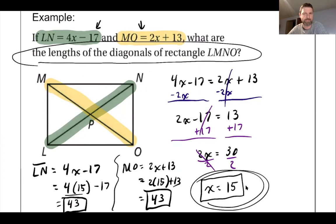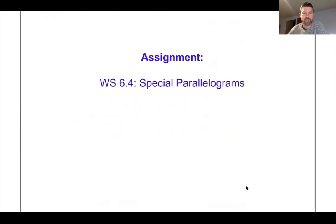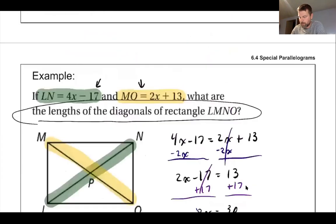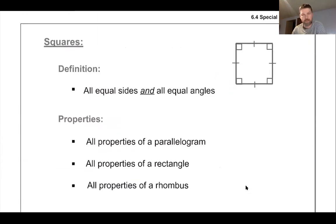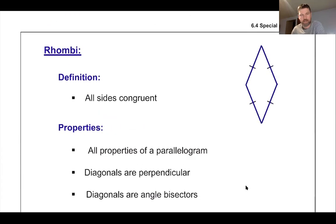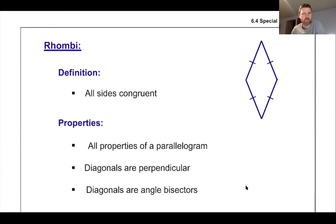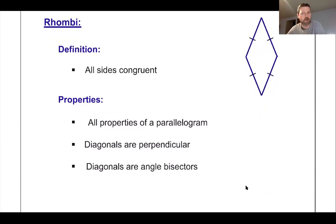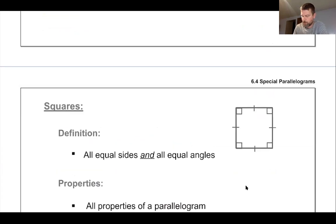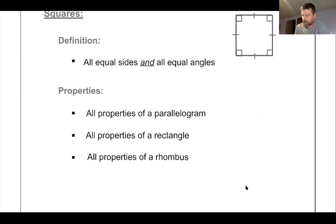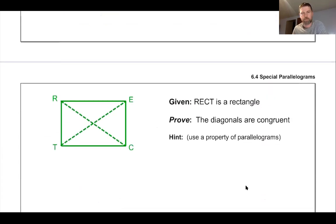That's the assignment — worksheet 6.4, Special Parallelograms. When you do this assignment, it will be really helpful to have these definitions and properties written down nearby. So make sure you have good notes. If you get stuck, you can look back and check — for example, diagonals are perpendicular in a rhombus, or a square has all the properties of both a rectangle and a rhombus.